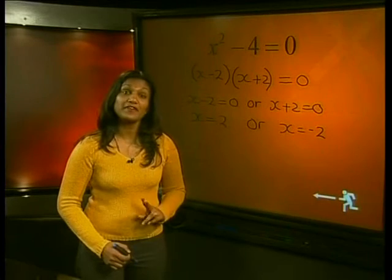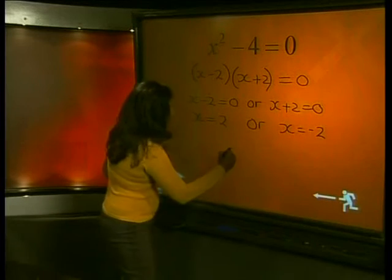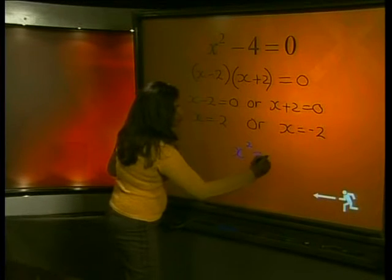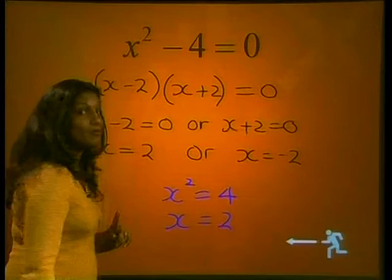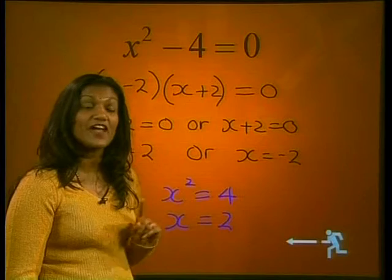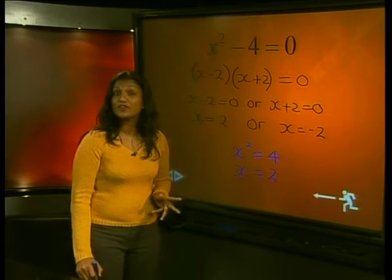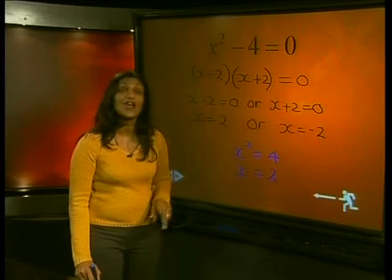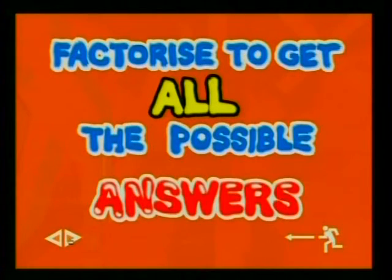Some of you may be thinking this seems a long way around — why can't we just say x squared equals 4 and then x equals 2? But what happened to our other answer of x equals negative 2? This is why we prefer to get everything equal to 0 and then factorize. Whenever we work with squares and square roots, we need to think there could be two answers, so we are more sure of getting all possible answers.